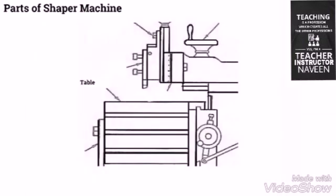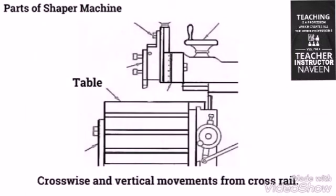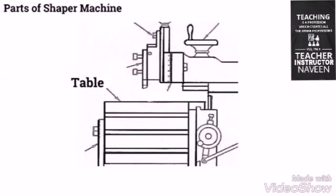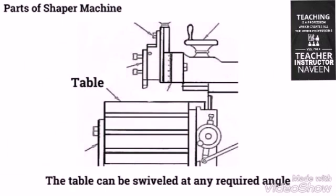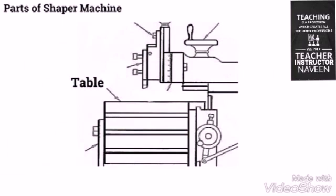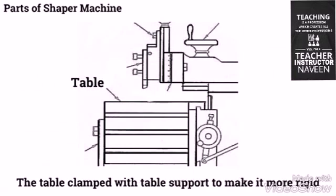The table is bolted to the saddle and receives crosswise and vertical movements from the cross rail. T-bolts are used for clamping on top and sides. The table can be swiveled at any required angle. In heavier type shapers, the table is clamped with a table support to make it more rigid.